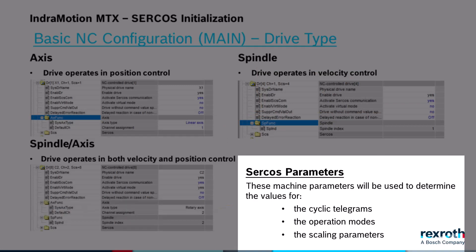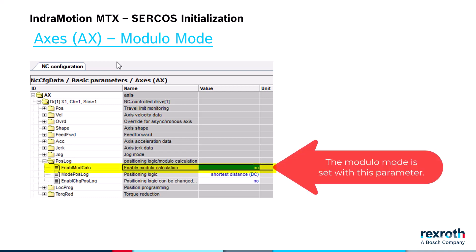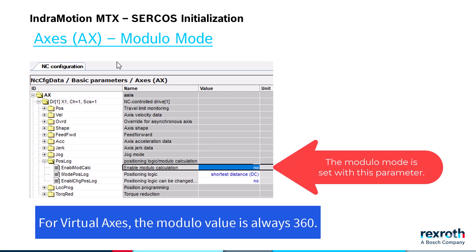These machine parameters will be used to determine the values for the cyclic telegrams, the operation modes, and the scaling parameters. The module mode is set in the axis parameters. The module value is set in drive parameter S103. The control reads the module value from the drive during startup. For virtual axes, the module value is always 360 degrees.